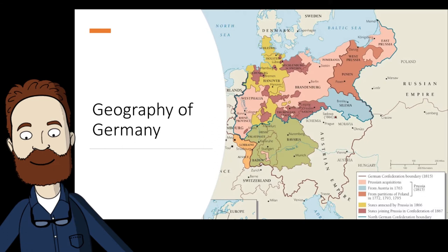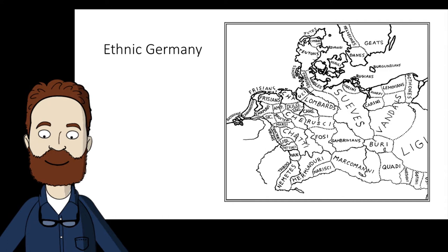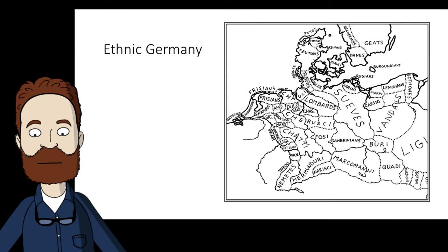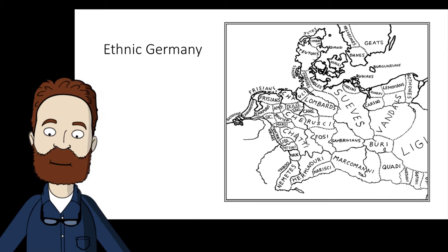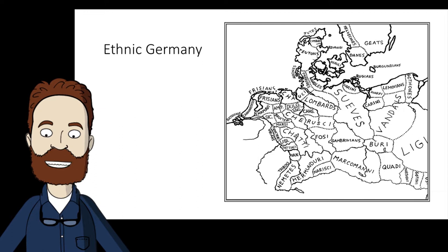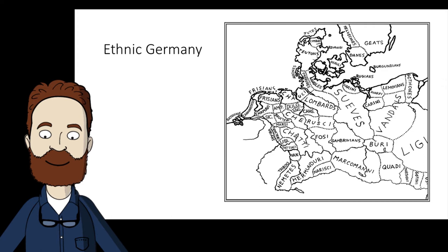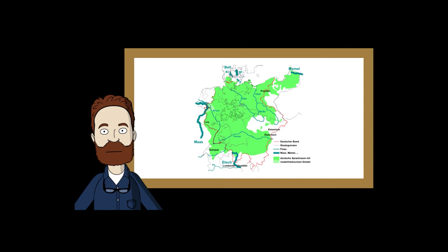Germany was far from homogeneous. Goths, Vandals, Franks, the Alemanni, Burgundians, Frisians, Saxons, and some Slavs all mingled to form the population of modern Germany, all with different cultures and histories. This idea of cleavage permeated German thinking, and this is very common of European ethnic or tribal divisions.